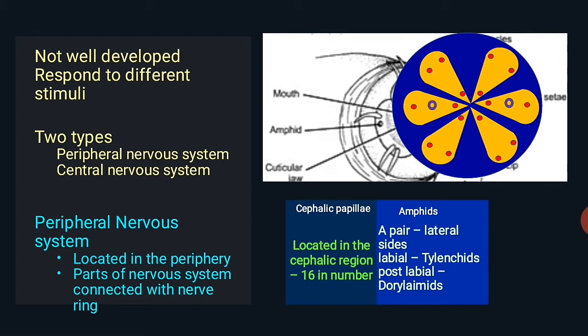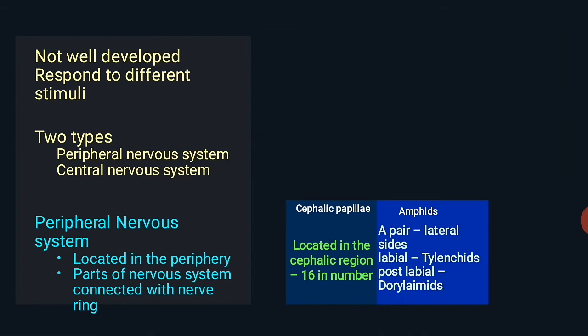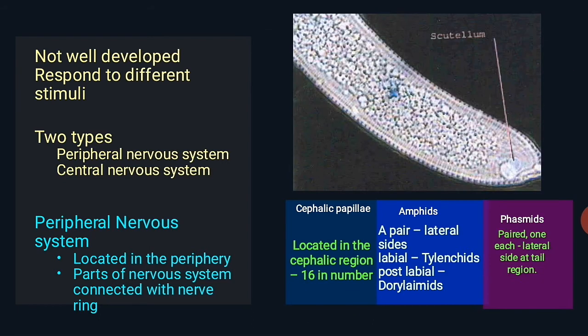The amphid apertures differ in shape across different nematodes. Next, phasmids: a phasmid is a paired structure, one on each lateral side at the tail region, opening outside through a minute pore. Phasmids are present in Hoplolaimus (aphasmid group) but absent in aphasmidia. A larger-sized phasmid called scutella is present in Scutellonema brachyurum.